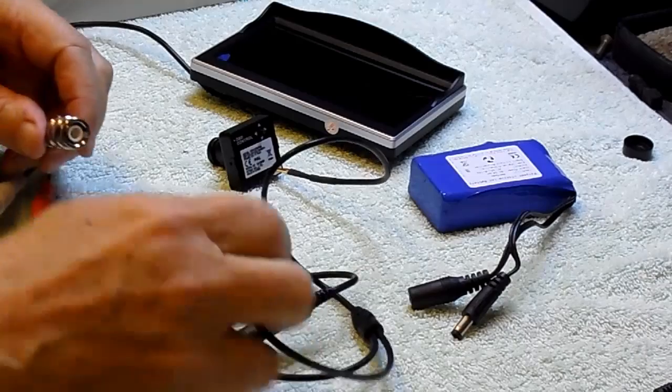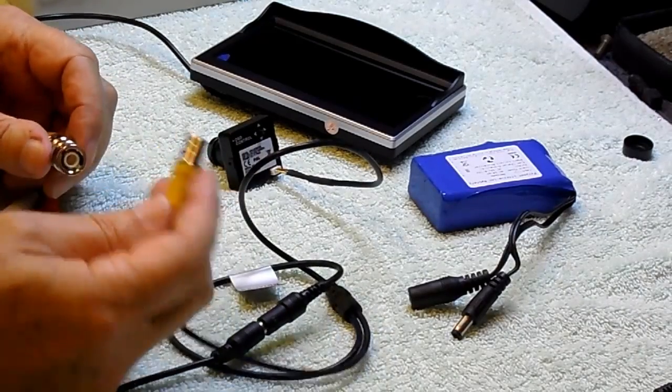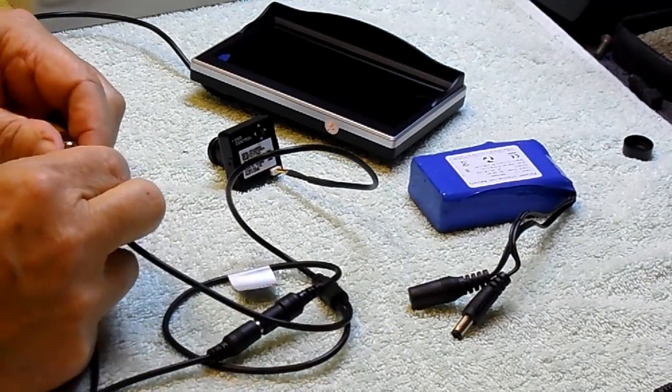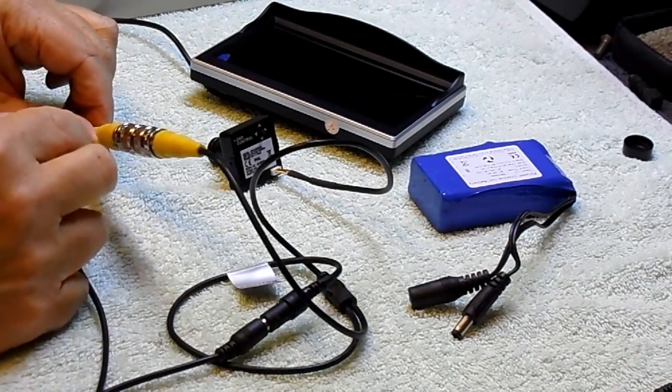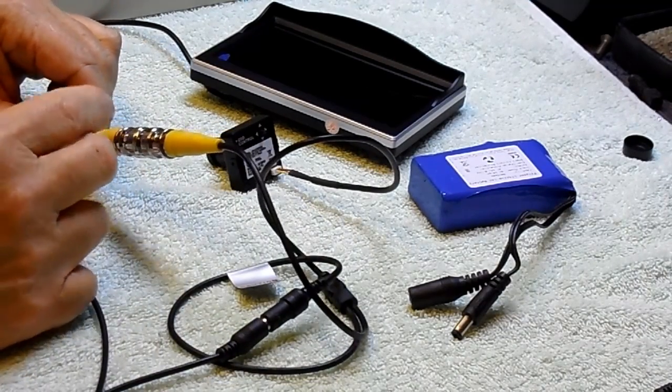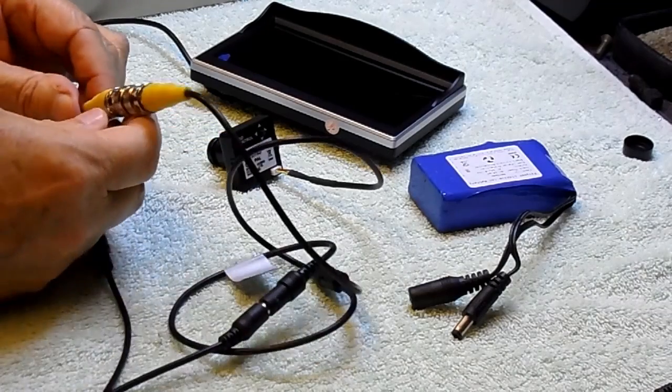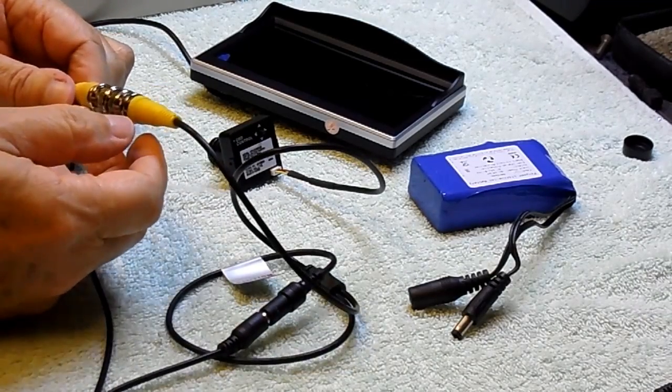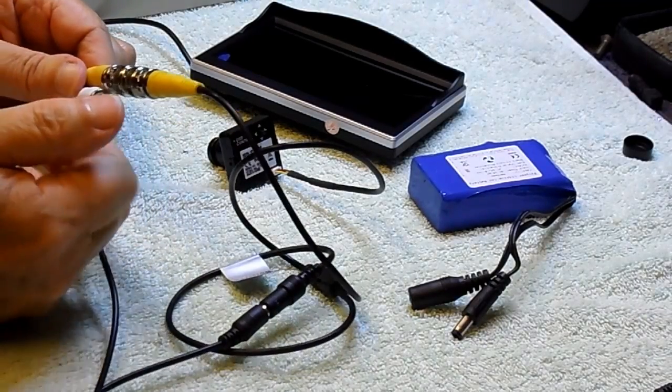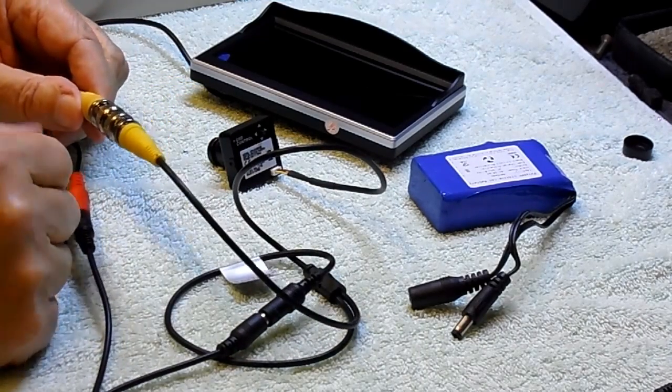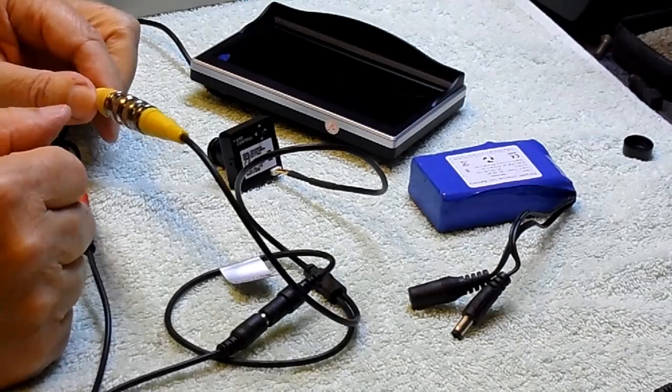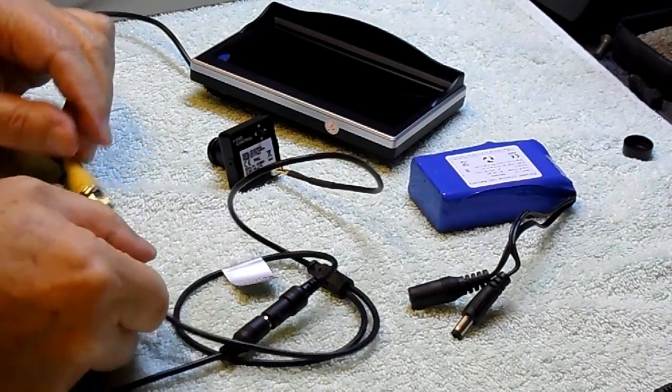Now connect together the video out from the camera to the video in on the monitor. Generally speaking, there's going to be two monitor video supplies, yellow and white. The normal one to use would be the yellow one, which shows up as AV1, but it doesn't really matter.